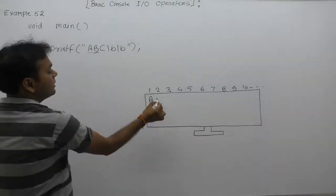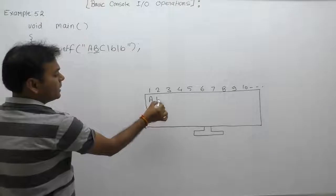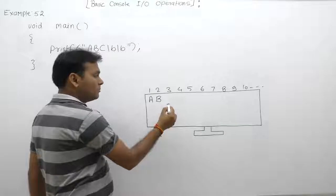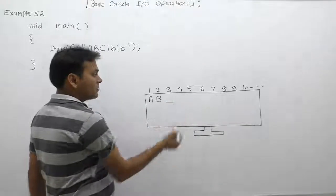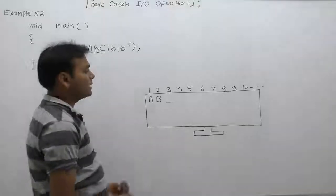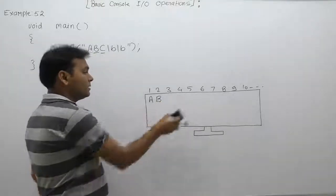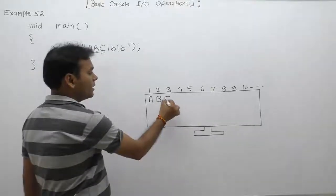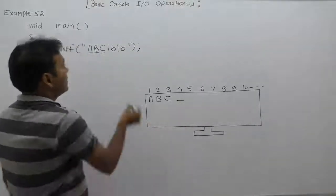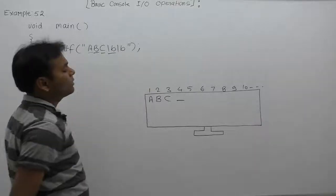After that, it will read 'b', then it will display 'b' on the current position. After printing any character, the cursor will be moved to the next position. Next, it will read 'c'. 'c' is also printable, then it will display 'c' on the current position. The cursor will be available on the fourth position.